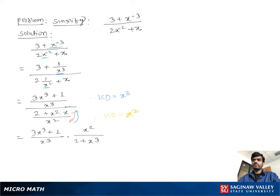Now multiply top to top and bottom to bottom so you get 3x cube plus 1 times x square over x cube times 2 plus x cube. Now x square x cube leaving the x as denominator we get 3x cube plus 1 over x times 2 plus x cube.